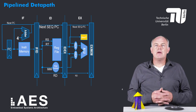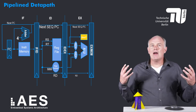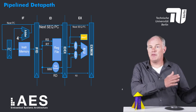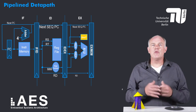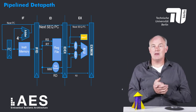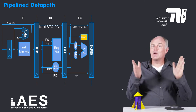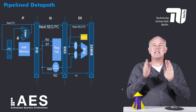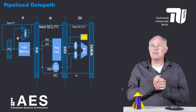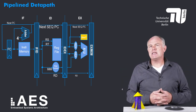This part of the data path corresponds to the execute stage. The operation the arithmetic logic unit or ALU performs depends on the instruction type. For R-type instructions it performs the operation specified by the function field. For loads and stores it computes the effective address by adding the base register RS, read in the previous stage, to the constant immediate sign extended in the previous stage. For branches it computes the target address by adding the next sequential PC plus 4 to the offset contained in the instruction. This offset is multiplied by 4 since it corresponds to a word offset, but for simplicity this is not shown in the figure.